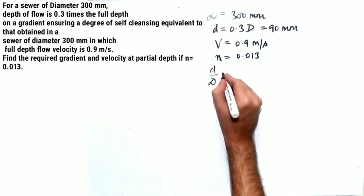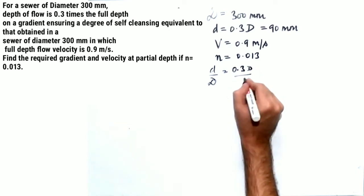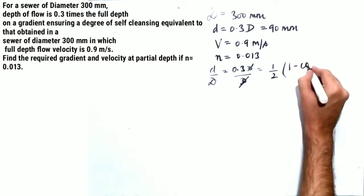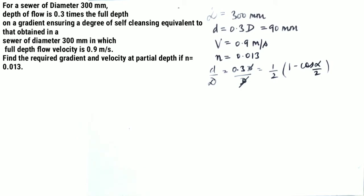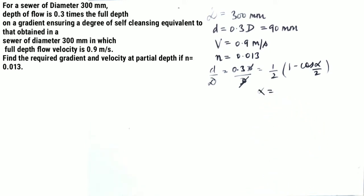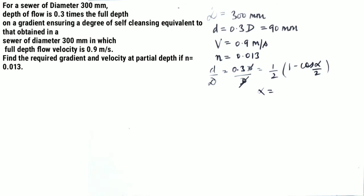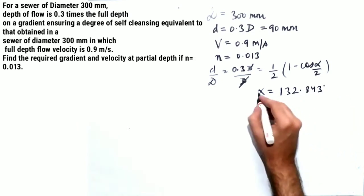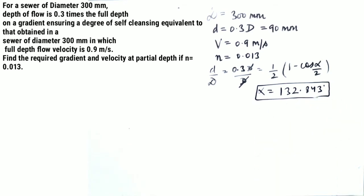To find alpha: d/D = 0.3 = (1/2)(1 − cos(α/2)). Solving this equation, alpha comes out to be 132.843 degrees. Now, since capital V is also given, you can use Manning's equation for full flow.